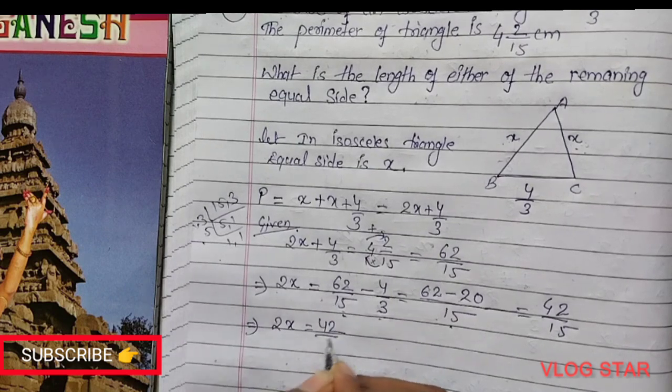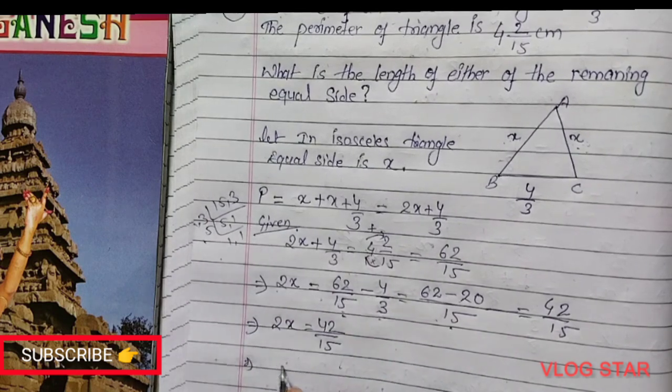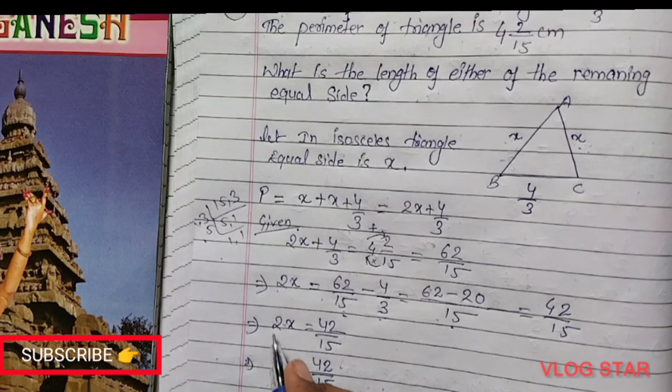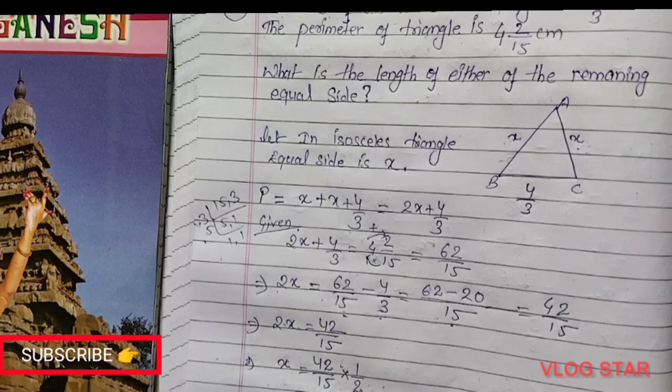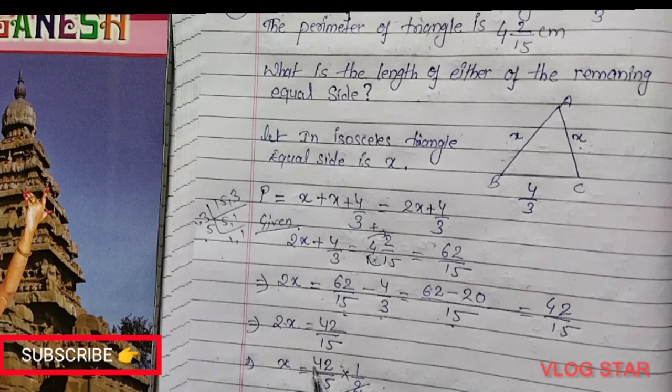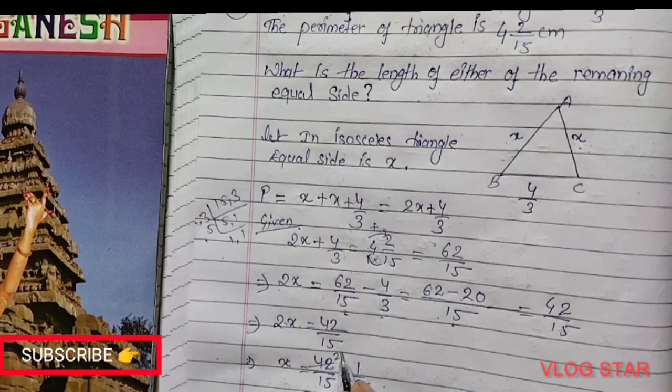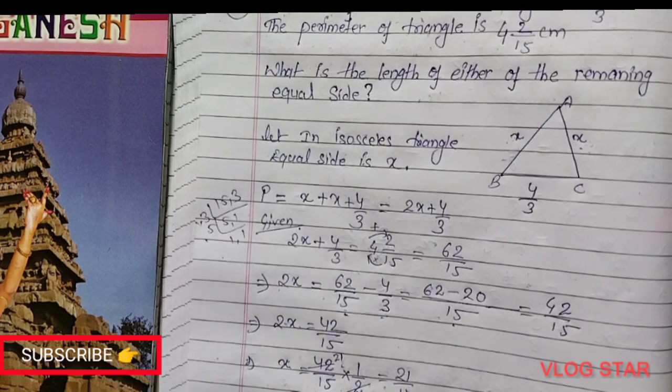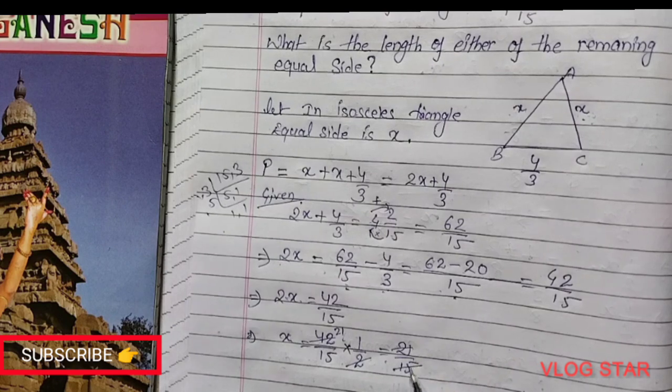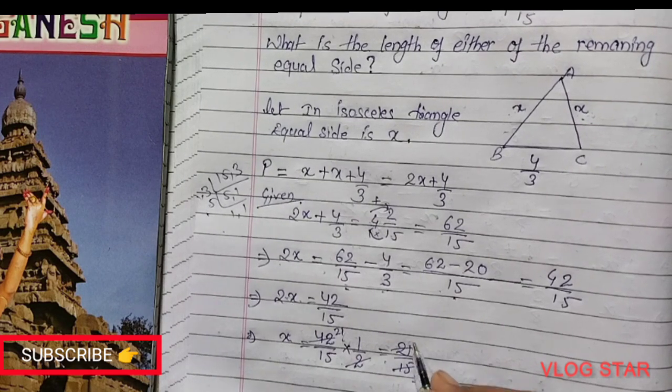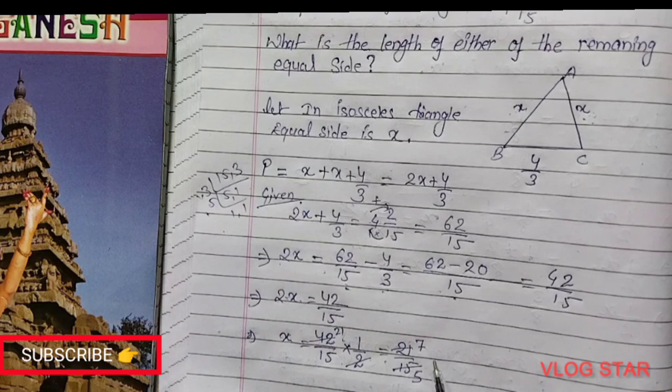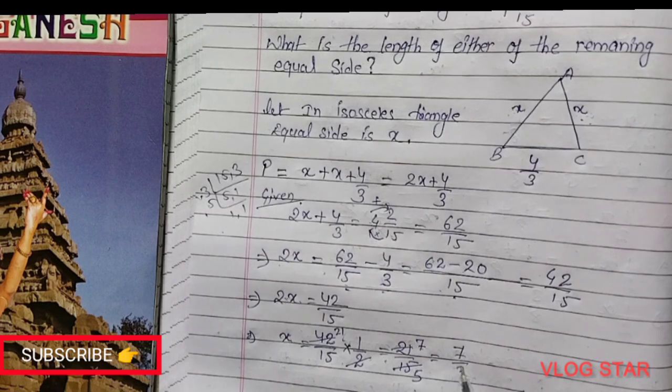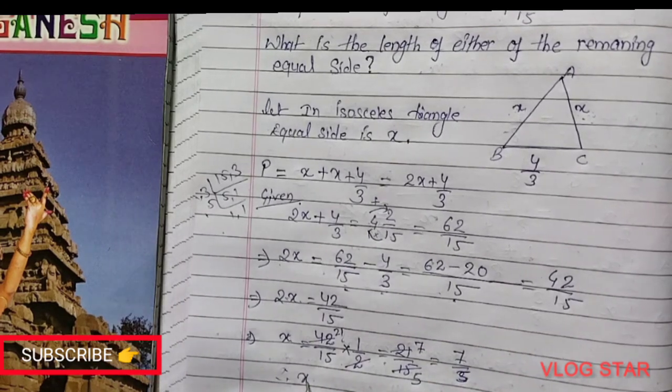We have 2X equals 42/15. Therefore X equals 42/15 divided by 2. If I cut this, 2 into 2 is 1, 2 into 4 is 2, I will get 21/15. If I cut it one more time, 5 times 3 is 15, 7 times 3 is 21. So the value of X is 7/5.